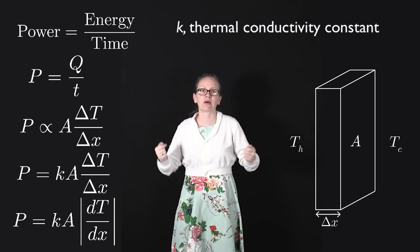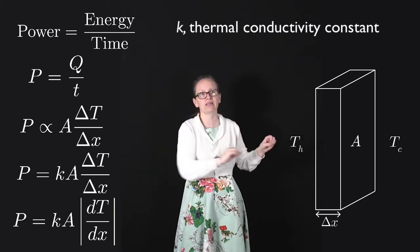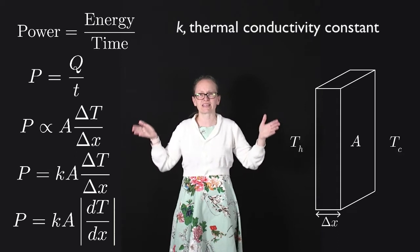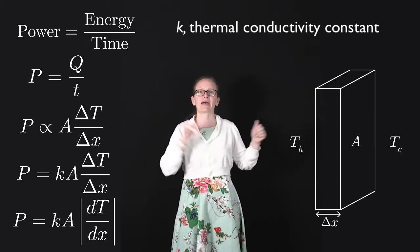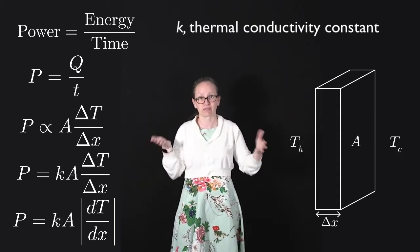The heat always flows from the warmer body to the cooler body, so we just want this as a positive number. And then we can work out which direction the heat is flowing.